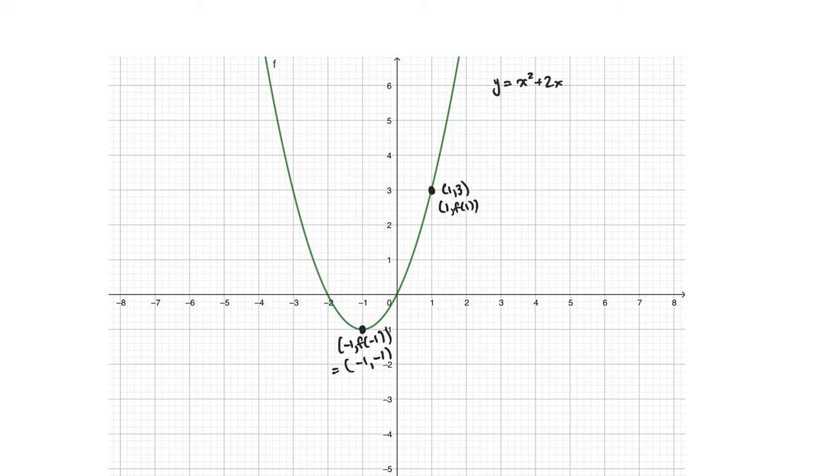So if I connect those with a straight line, and if you'll forgive my lack of artistic ability, then let's just pretend that that actually goes through there, then I want to compute the slope of that line. So the slope of the secant is, well, since we have two points, we can just do the usual rise over run problem.